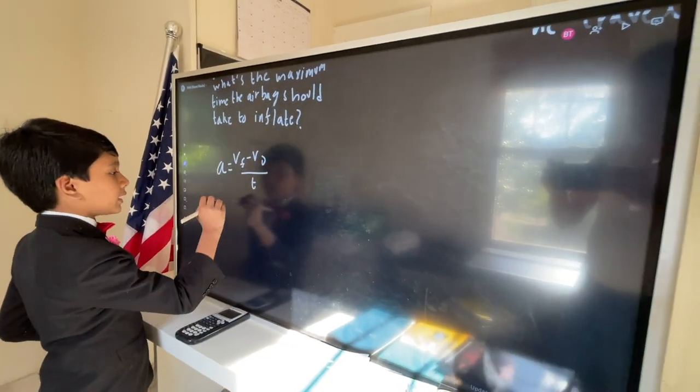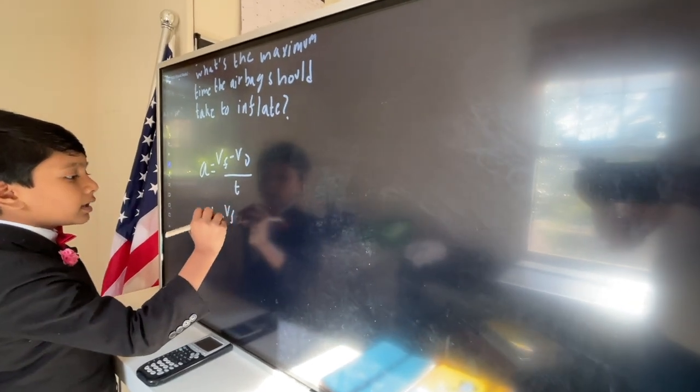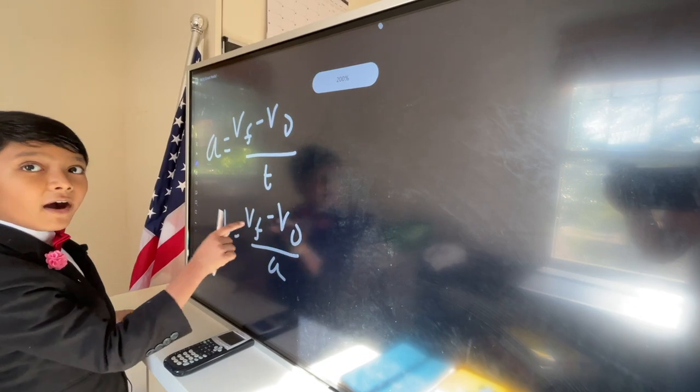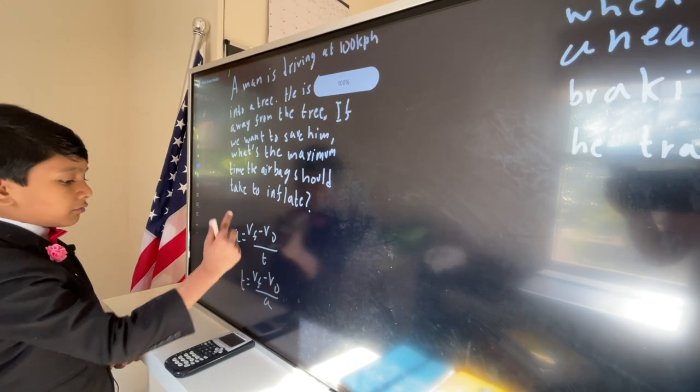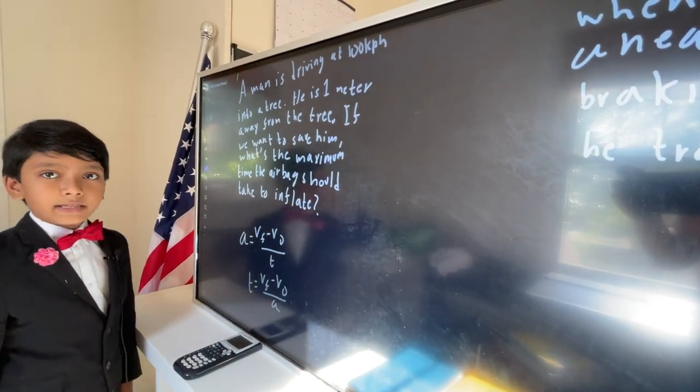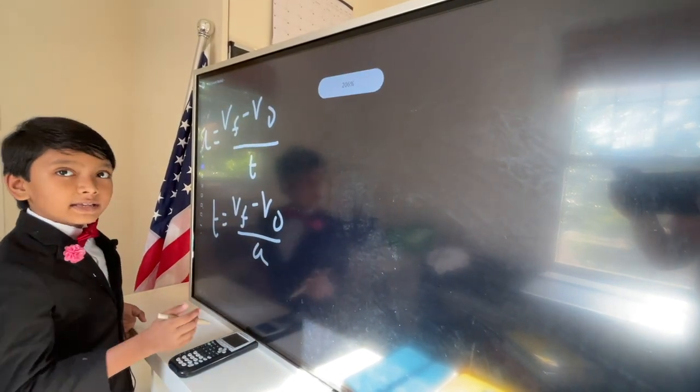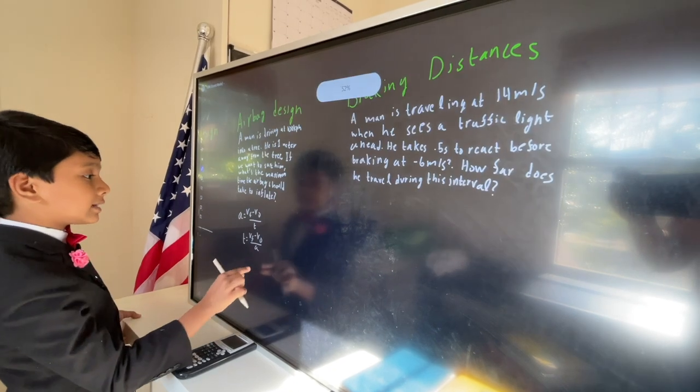So when you rearrange the equation, time is velocity over acceleration. Now, velocity is fine because we know that he's initially at 100 kph and slows down to zero once he hits the tree, but what about acceleration? That's why we need to find acceleration.